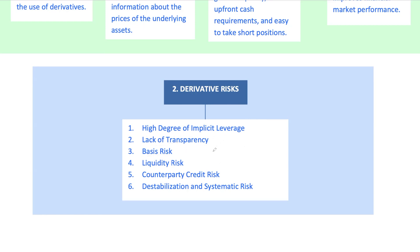Basis risk is another tricky one. This arises when the derivative doesn't perfectly match the asset it's meant to hedge. For example, if you're hedging wheat but using a futures contract tied to a different grade or type of wheat, the hedge might not work as intended. There's also liquidity risk — if you can't meet a margin call, your position might get closed out at a loss. Counterparty credit risk comes into play, particularly with OTC contracts where there's no clearinghouse to step in if the other party defaults. Finally, derivatives can increase systemic risk by amplifying volatility and leading to broader market instability.